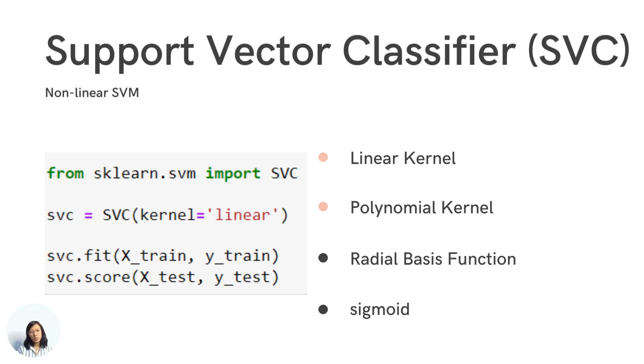Polynomial kernel is pretty expensive, so in practice we seldom use polynomial kernels. Sigmoid is mainly used for neural networks. So by default, for support vector classifier, we usually use RBF. In sklearn, RBF is the default value. If you don't set any value for the kernel, RBF will be used.